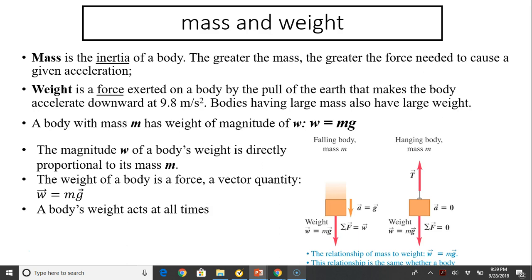Weight, on the other hand, is the force, which is a vector quantity. Weight is the force exerted on a body by the pull of the earth that makes the body accelerate downward at 9.8 meters per second every second. Bodies having large mass also have large weight.